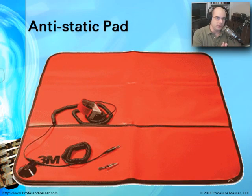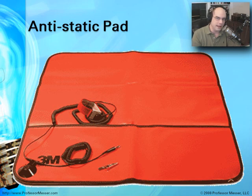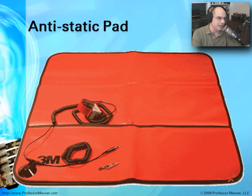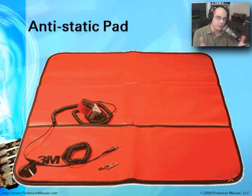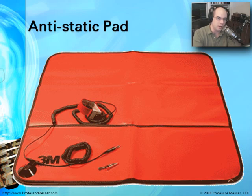This is an anti-static pad. If you're laying out a lot of different electrical components on top of a desk and you want to be sure you're not going to cause any electrostatic discharge to those components, you can use a pad like this. The pad itself has a connector at the edge, and that connector uses the same type of cord as a wrist strap. Think of this as a very large wrist strap that includes everything on that pad. You want to use the pad and the wrist strap at the same time. This way, what you're laying your sensitive electronic components on is protected from ESD.